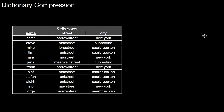What is dictionary compression? Dictionary compression helps in situations like this one. Look at this table of colleagues. We have a primary key name and two attributes: street and city. Notice that this table is in third normal form — it's actually also in Boyce-Codd normal form. Still, we have a lot of redundancy. We have Mack Street appearing multiple times, Long Street appearing only once, and Uni Street appearing multiple times. The same holds for cities: Saarbrücken appears many times, New York appears many times, and so forth.